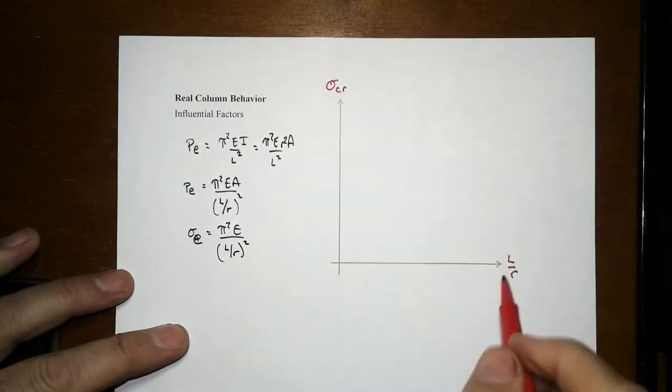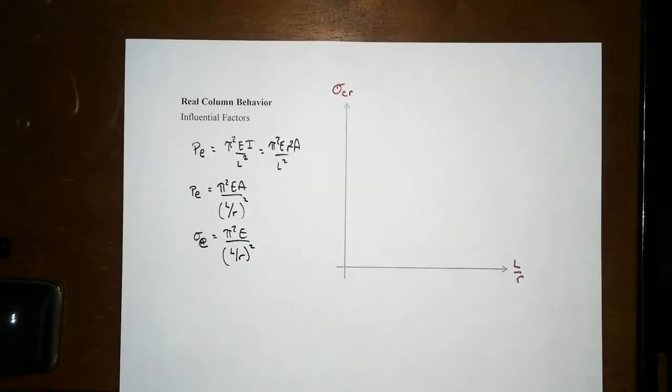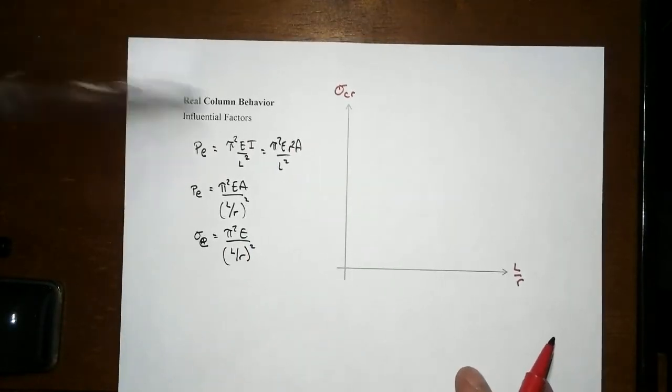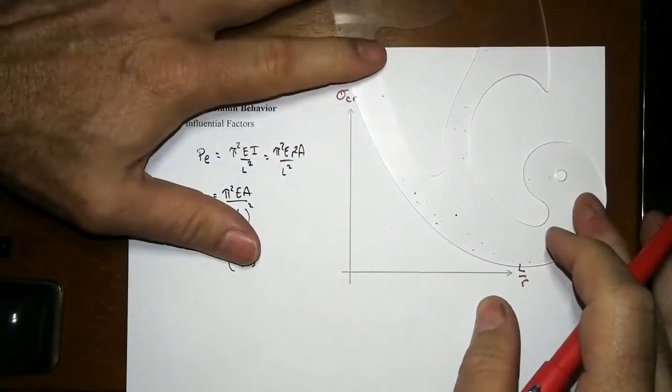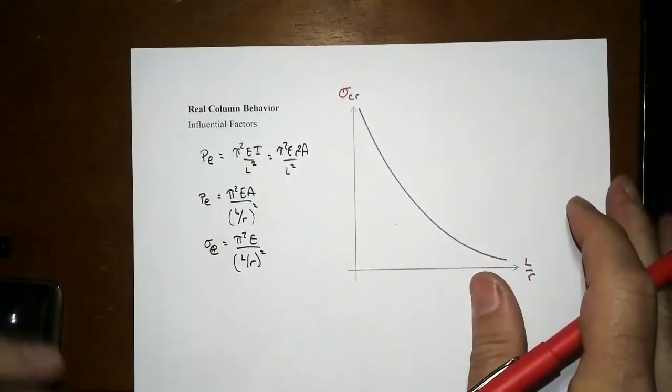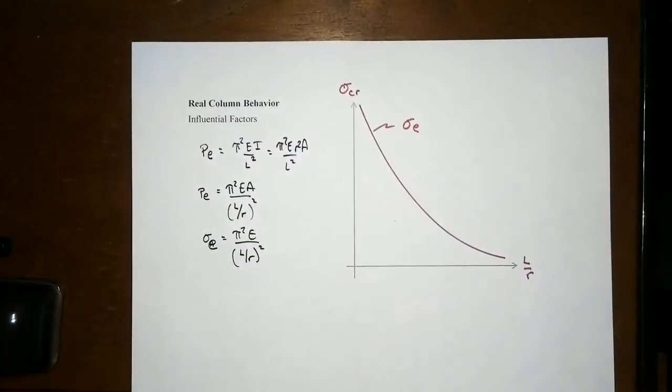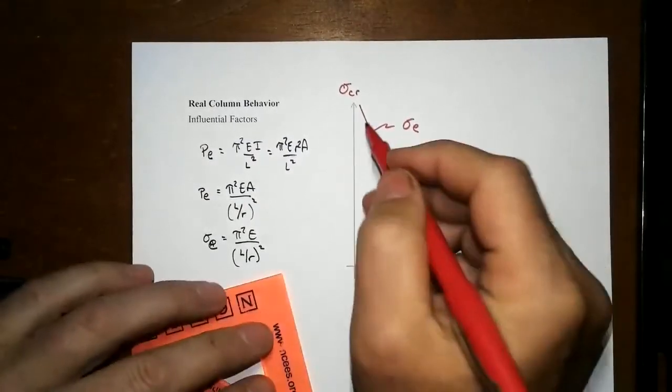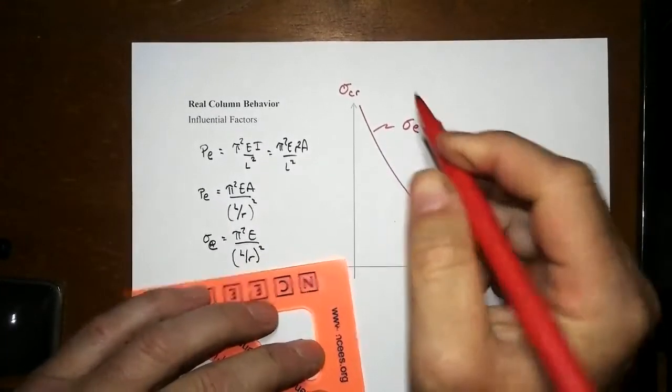If we plot the critical stress versus the slenderness ratio, it's one over x squared, which is kind of interesting. It has a hyperbolic relationship going on. That's our sigma E. This will go off to infinity the shorter and stockier the member is.